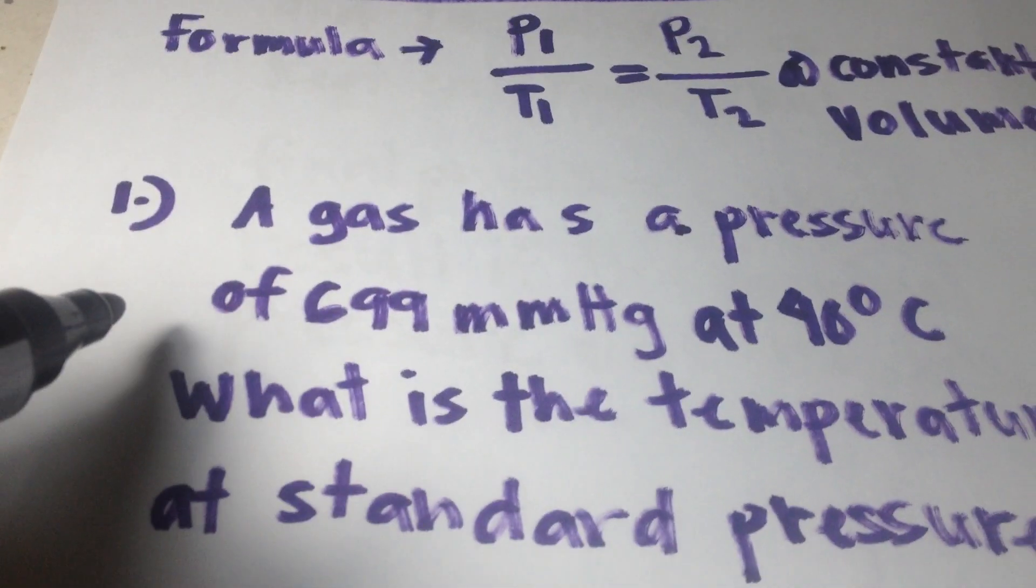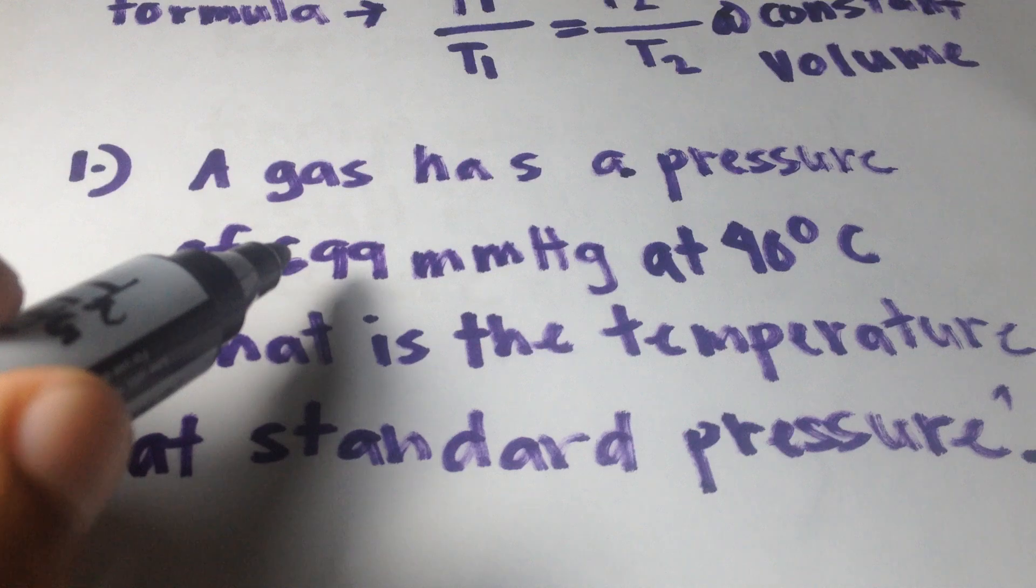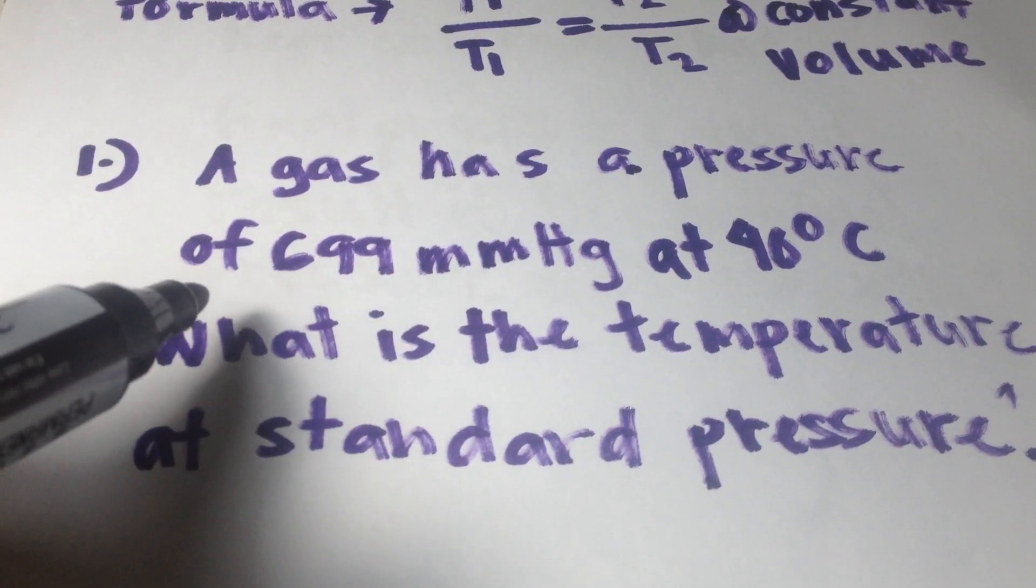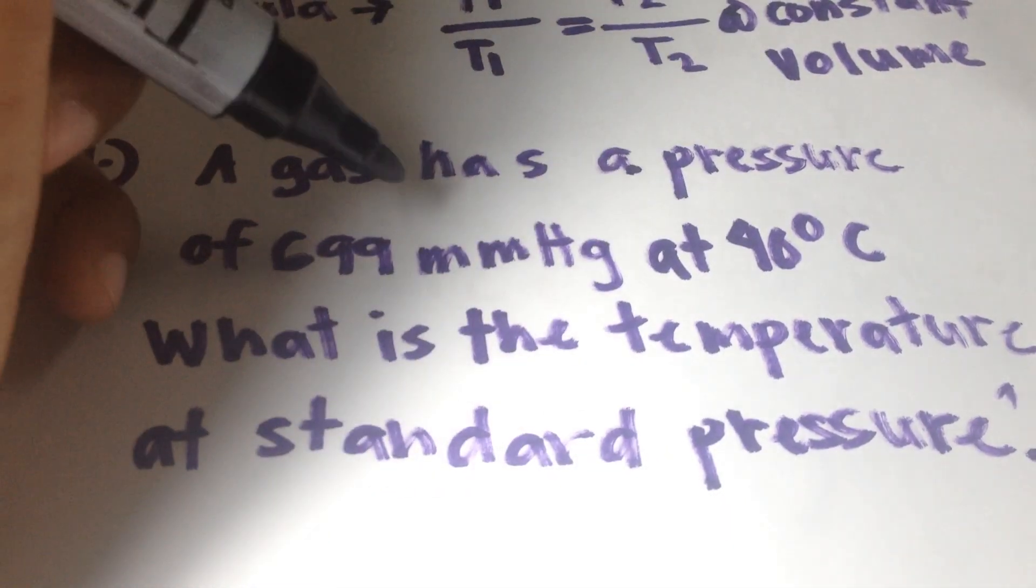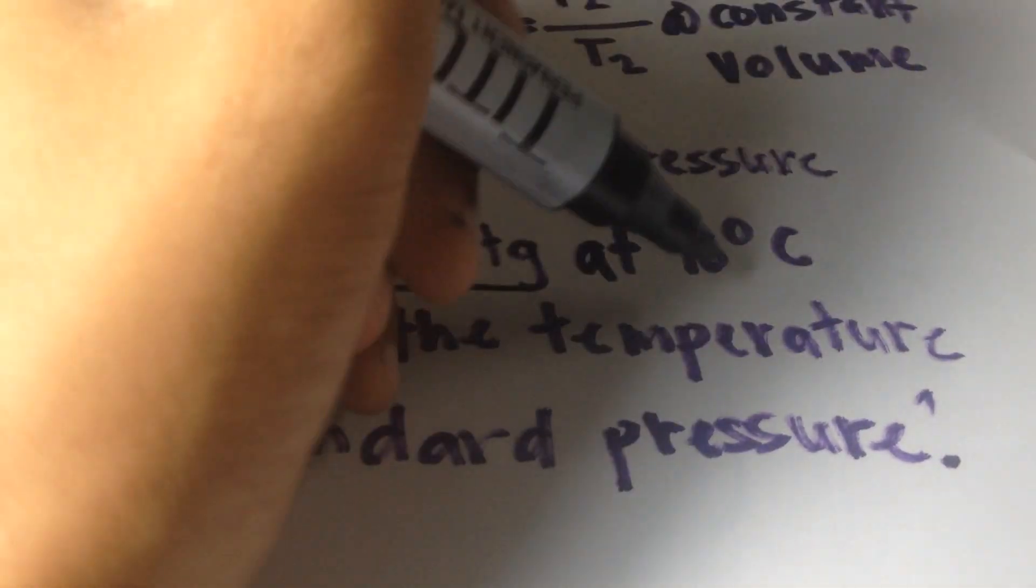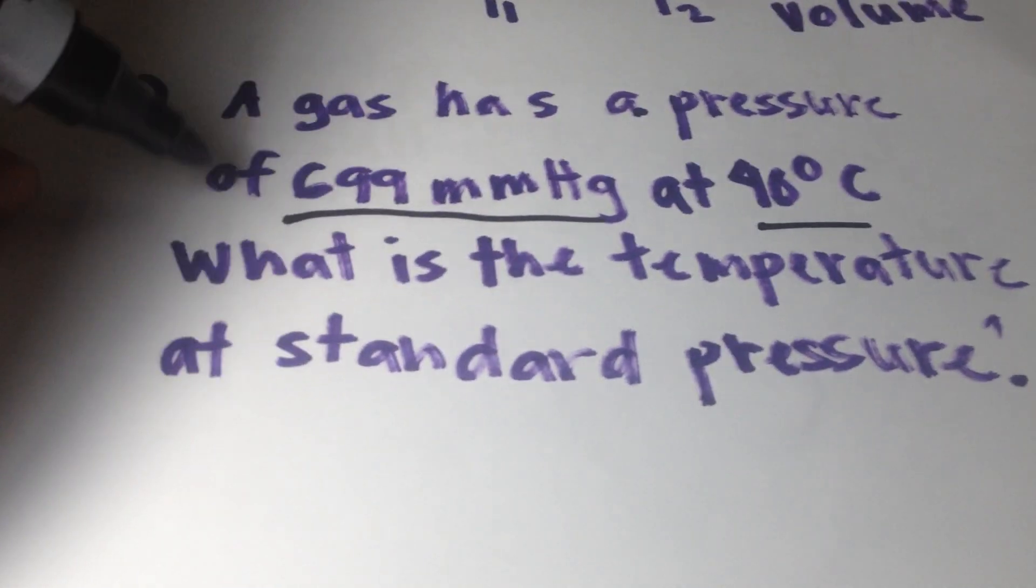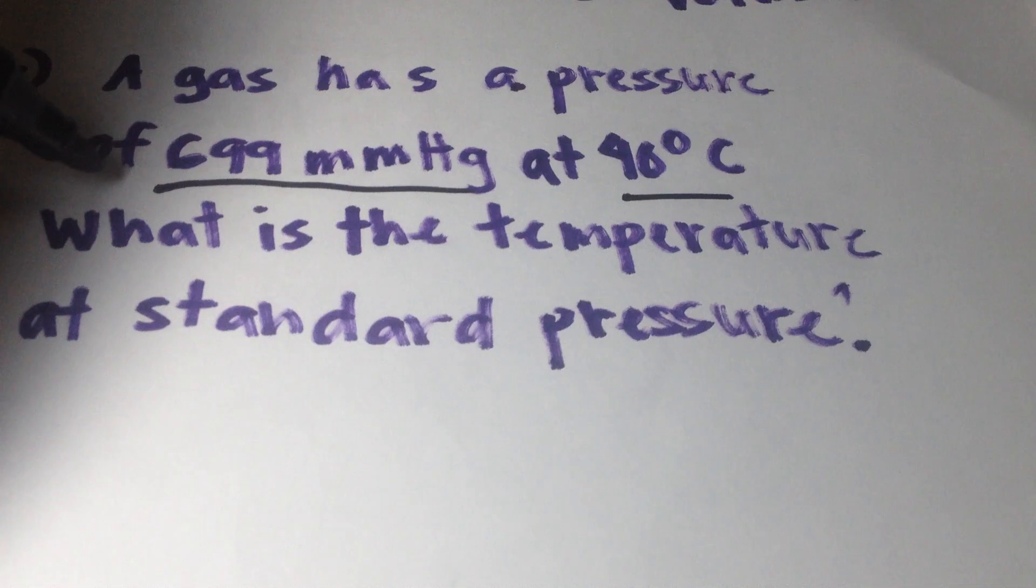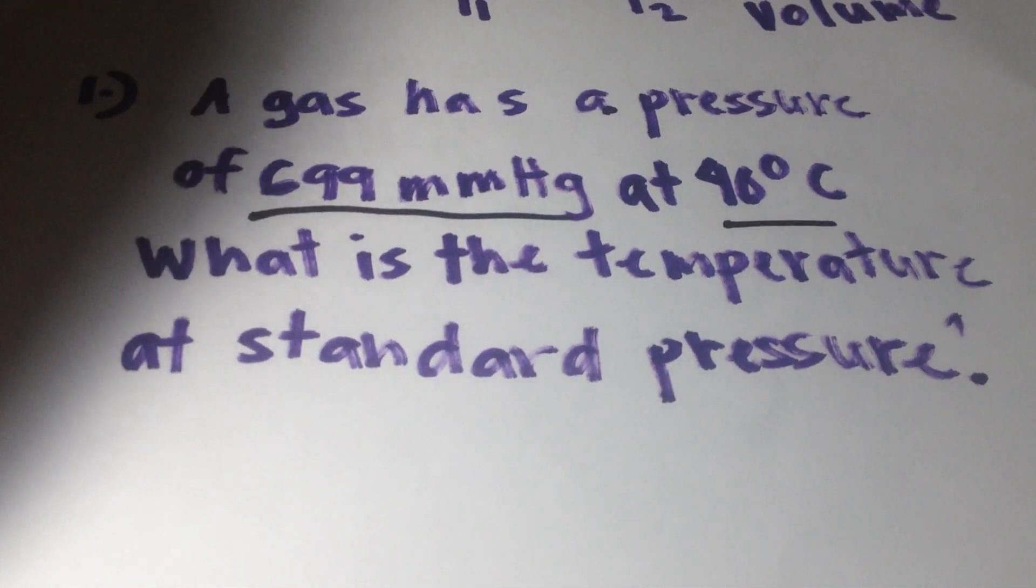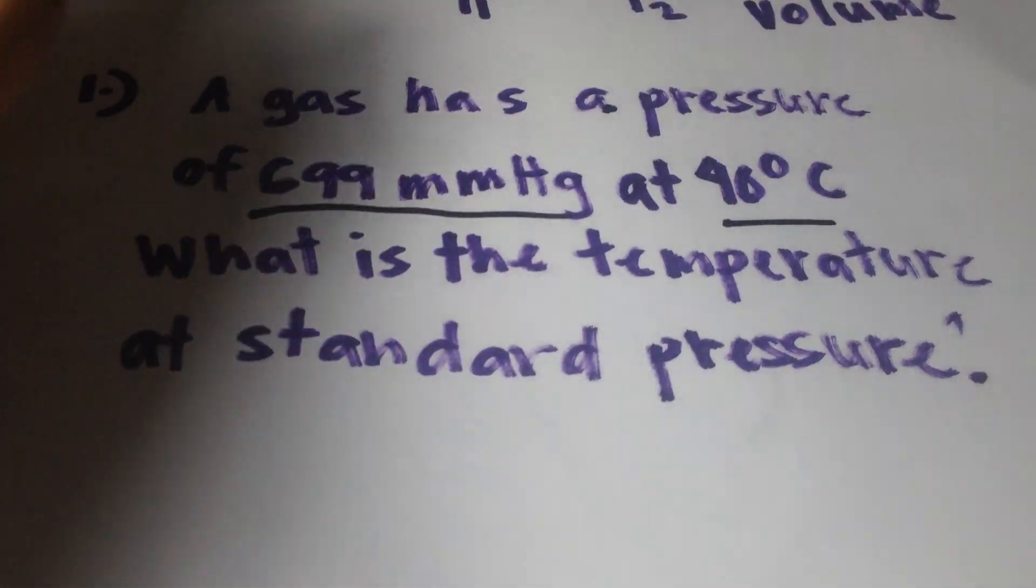Let's begin with number one. This is the number one problem: a gas has a pressure of 600 mmHg at 40 degrees Celsius. What is the temperature at standard pressure? We need to find the final temperature, which is T2.